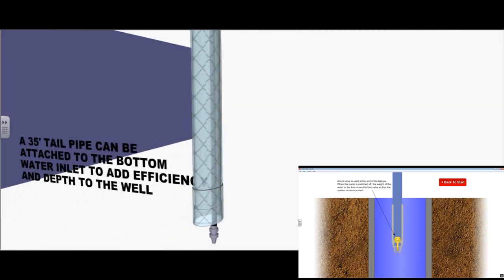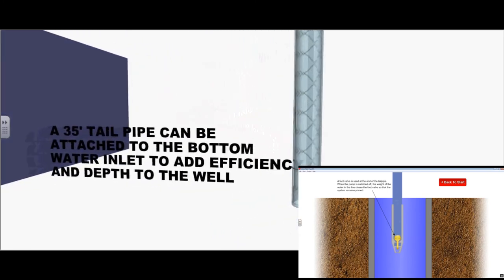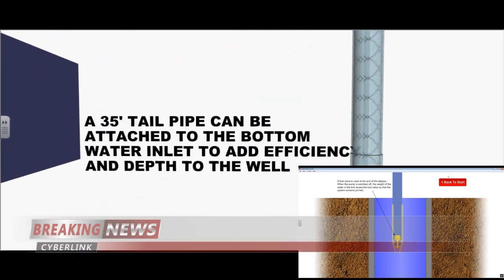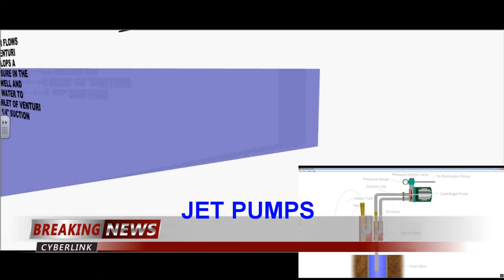It's also possible to put a 35 foot tail pipe or attach it to the bottom of the water inlet to add efficiency and depth to the well.